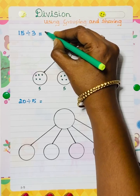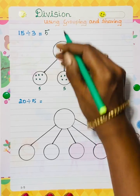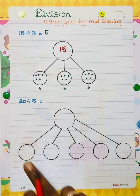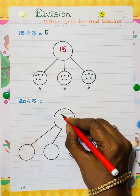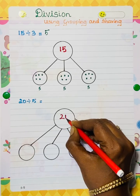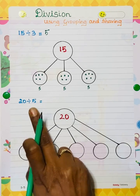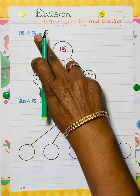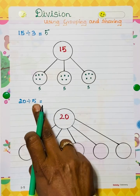So the answer is 5. Second sum: 20 divided by 5. We have to write the number 20, then 5 circles here.